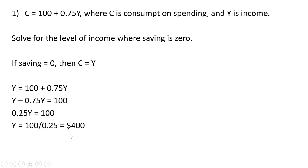100 divided by 0.25 is 400. So when income is 400, consumption should also be 400 and saving is zero. We can double-check that. At Y equals 400, we plug that into the consumption function and get 400. So C equals Y. There is zero saving.